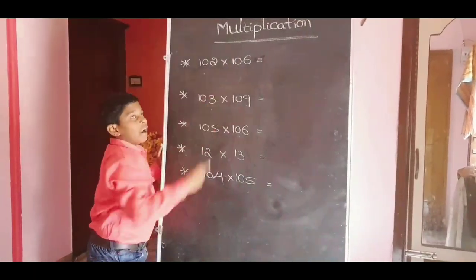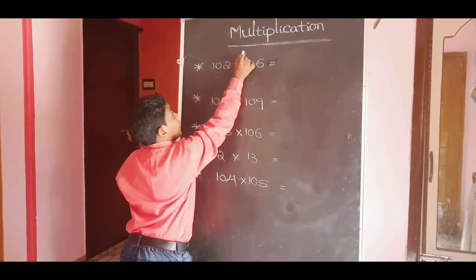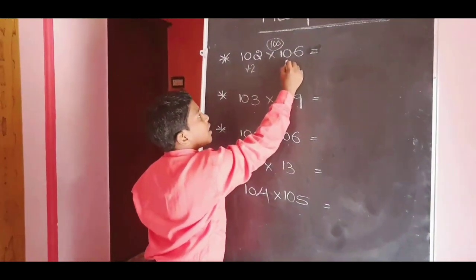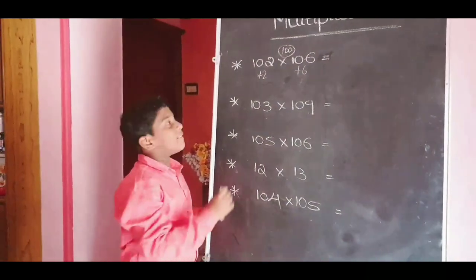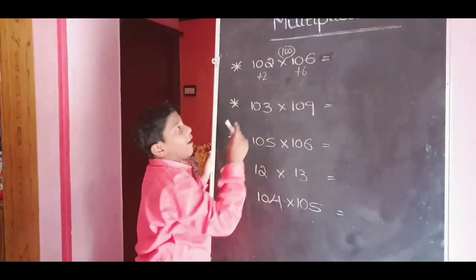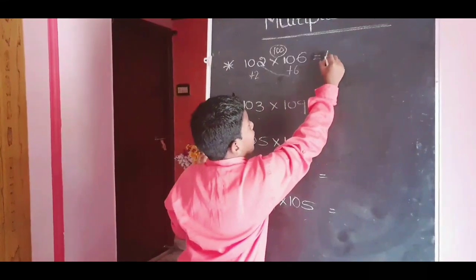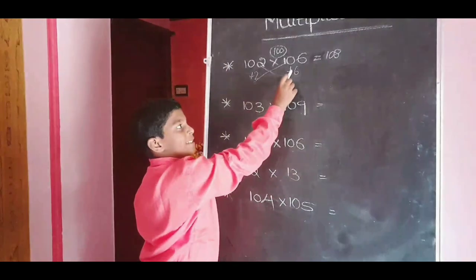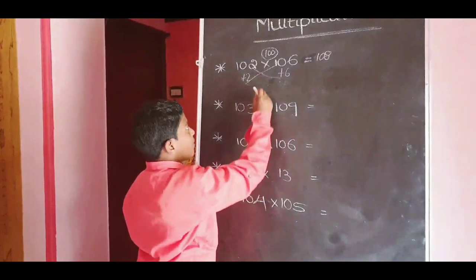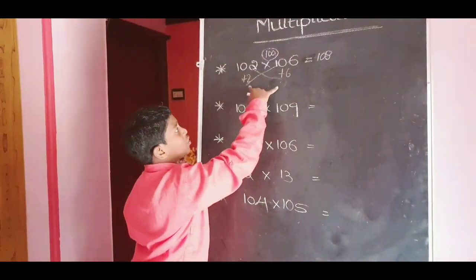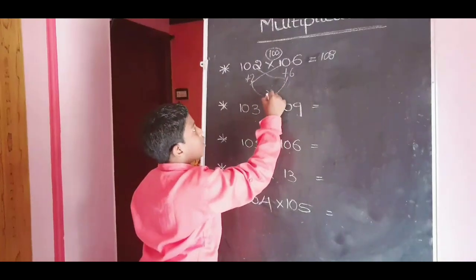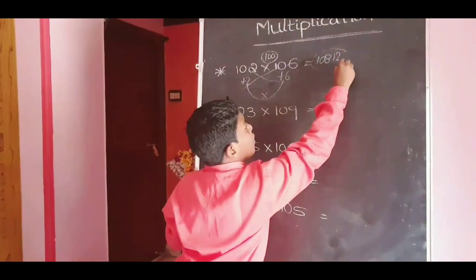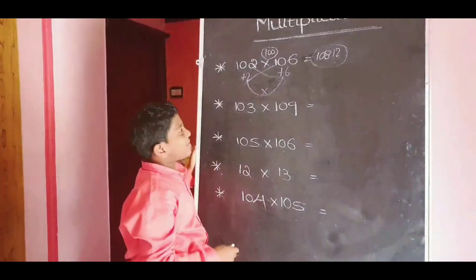102 into 106. This is nearest to 100. For 100, 102 plus 2; for 100, 106 plus 6. First way: 102 plus 6 equals 108, or 106 plus 2 equals 108. 2 plus 6 is 8, and 8 plus 100 equals 108. After, these two should multiply: 2 into 6. 2 into 6 are 12. The answer is 10812.